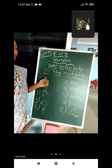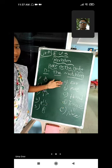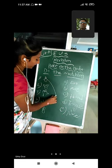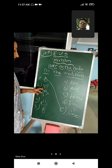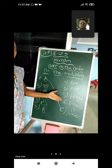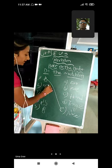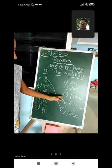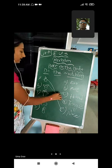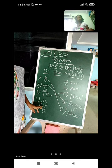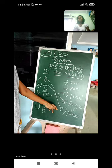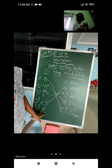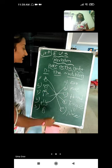Listen carefully, my dear kids. First one is nose — option E is nose. Do that matching. Second one is tongue — option D is tongue. Third one is hand — option C is hand. Fourth one is foot — option B is the foot. Fifth one is ear — option A is the ear.